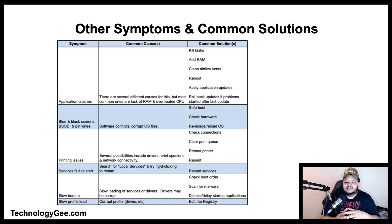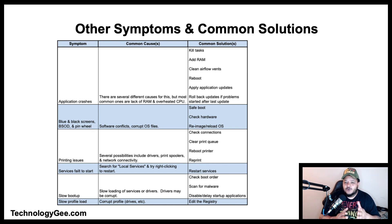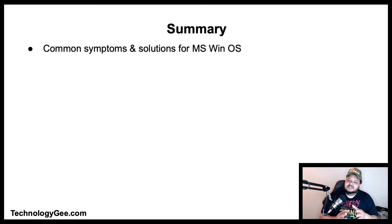Other symptoms and solutions related to the A+ Core 2 objectives found at objective 3.1 are listed below. Being that we're dealing with Windows there could be a myriad of issues — these are just some of the most common ones. This chart will be available on my website technologyg.com where this video will be posted.